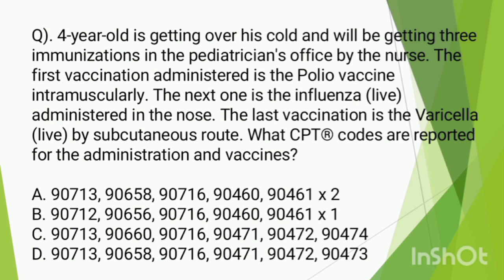Code 90471 is the first code, then 90472, and 90474. Code 90471 description covers intramuscular injection — the polio vaccine is administered intramuscularly. That's why 90472 follows. So 90471 and 90472 are correct.